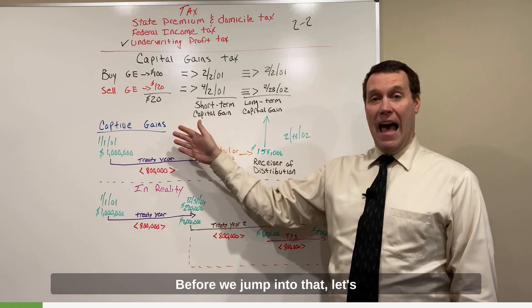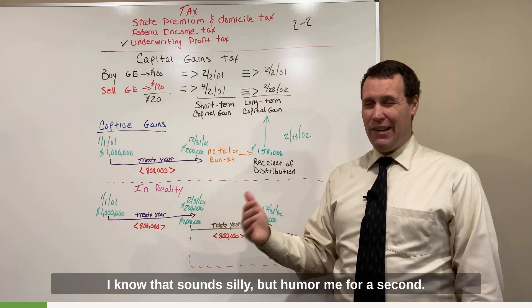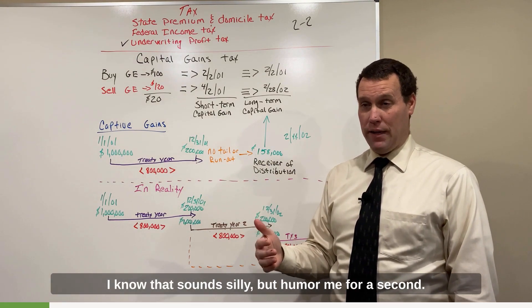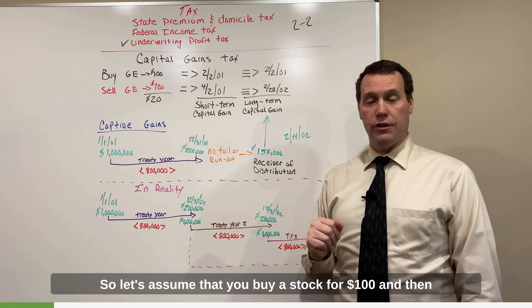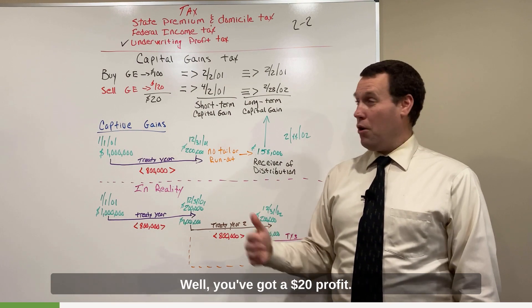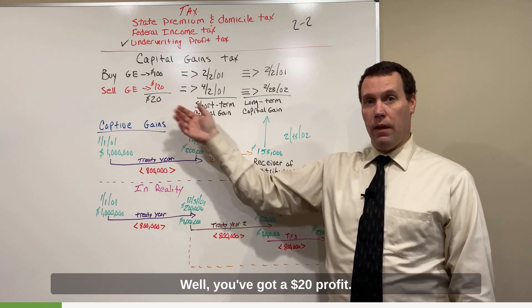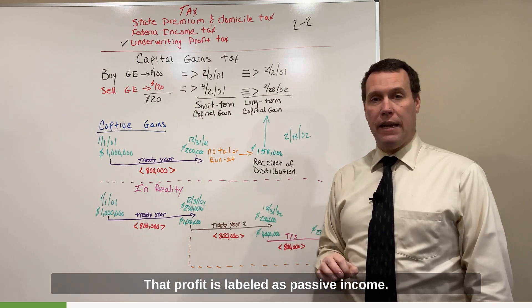Just take what I'm saying as a high-level overview of how underwriting profits are taxed to the insured. Before we jump into that, let's define what a profit is. I know that sounds silly, but humor me for a second. So let's assume that you buy a stock for $100 and then at some point in the future you sell it for $120. Well, you've got a $20 profit. That profit is labeled as passive income.